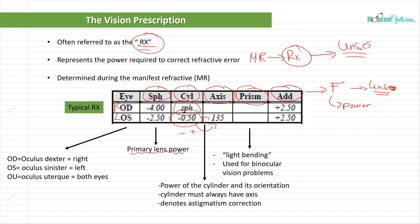Prism is a unique element used to usually correct binocular vision problems — it bends light differently than in a traditional setup. Not every prescription will have prism; most won't. However, whenever prism is present it must be incorporated in the lens — it's vital to the patient having proper vision and comfort. The prism value is in prism diopters and must always have a base direction, such as base down. You absolutely cannot omit prism if it's prescribed.